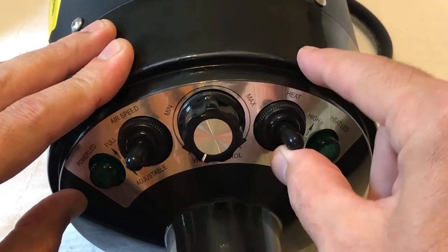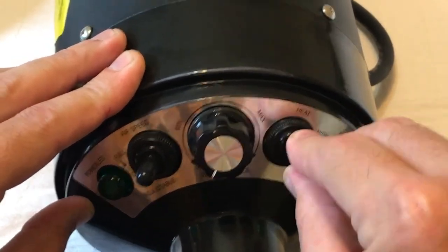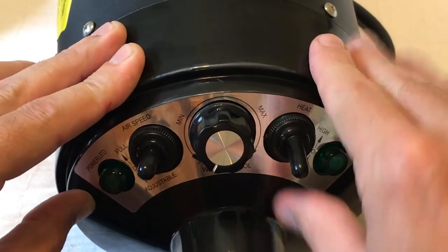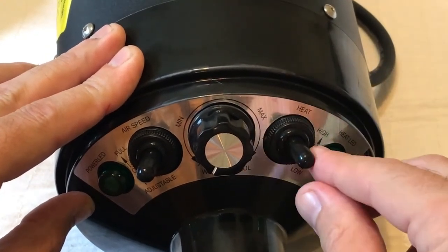So you've got a high heat, which is up. You've got a low heat, which is down. And then you've got no heat, which is in the middle.